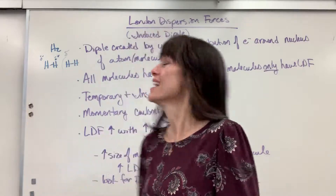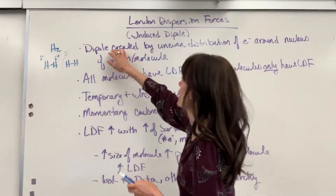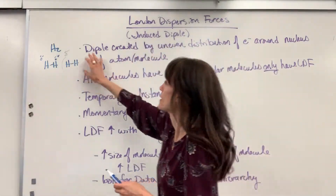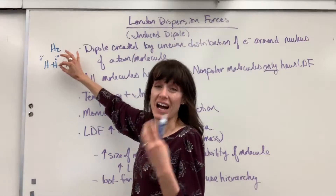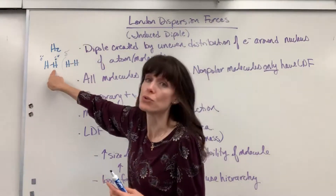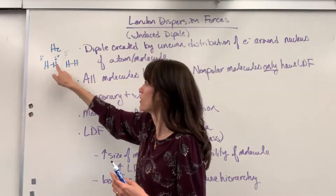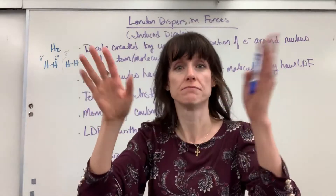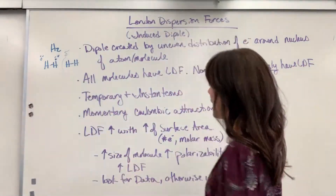That's a London dispersion force. For just a moment, we have created a dipole — a dipole has been induced. Because those electrons randomly came to this side, there was a high density of electrons, so partial negative, and it induced and created a dipole. The neighboring molecule's electrons were repelled, so you've got a partial positive. For just a second they attract, and then it's gone. So London dispersion — there you have it.